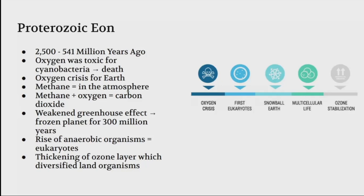After this 300 million years, there was the rise of anaerobic organisms, also known as eukaryotes. During this time there was thickening of the ozone layer, which diversified land organisms.